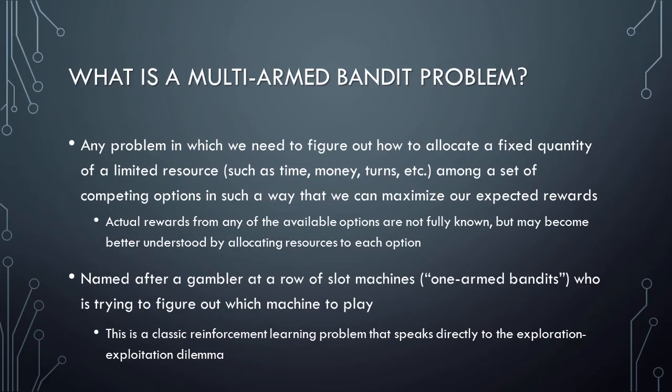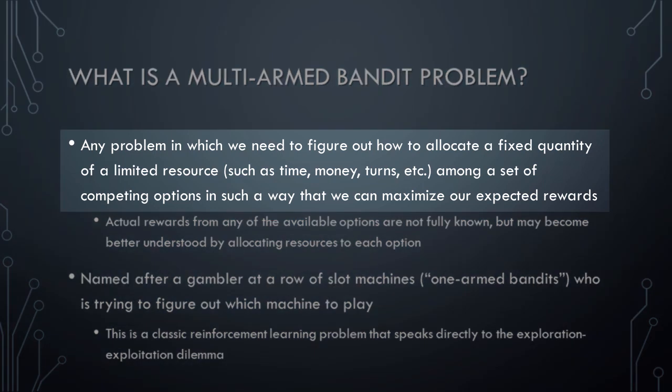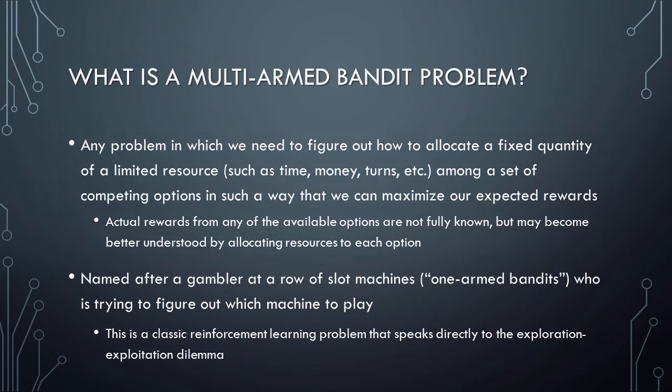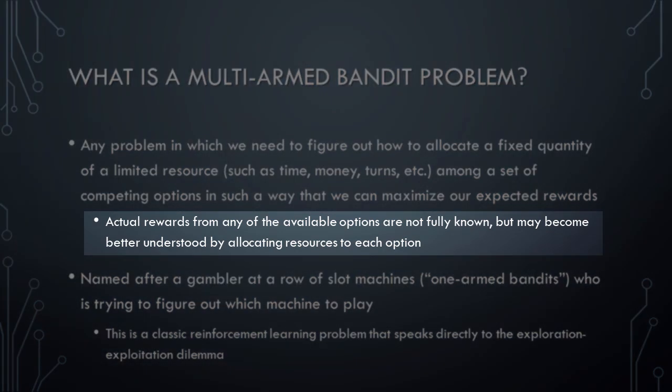If we're going to learn about Reinforcement Learning in the context of the Multi-Armed Bandit Problem, it would be a good idea to begin by describing what a Multi-Armed Bandit Problem actually is. A Multi-Armed Bandit Problem is any problem in which we need to figure out how to allocate a fixed quantity of limited resources among a set of competing options in such a way that we can maximize our expected rewards. The limited resource might be many different things, such as time, money, turns, etc. The actual rewards that we might get from any of the available options are not fully known, but may become better understood as we allocate resources to each option.